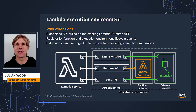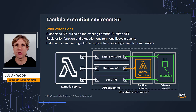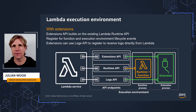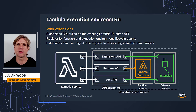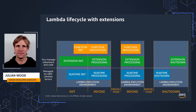In the previous video, I went through how the Extensions API builds on the existing Runtime API. Extension authors use the Extensions API to register for lifecycle events and, in response to these events, run some code. Extensions can also subscribe to the Logs API to receive logs.